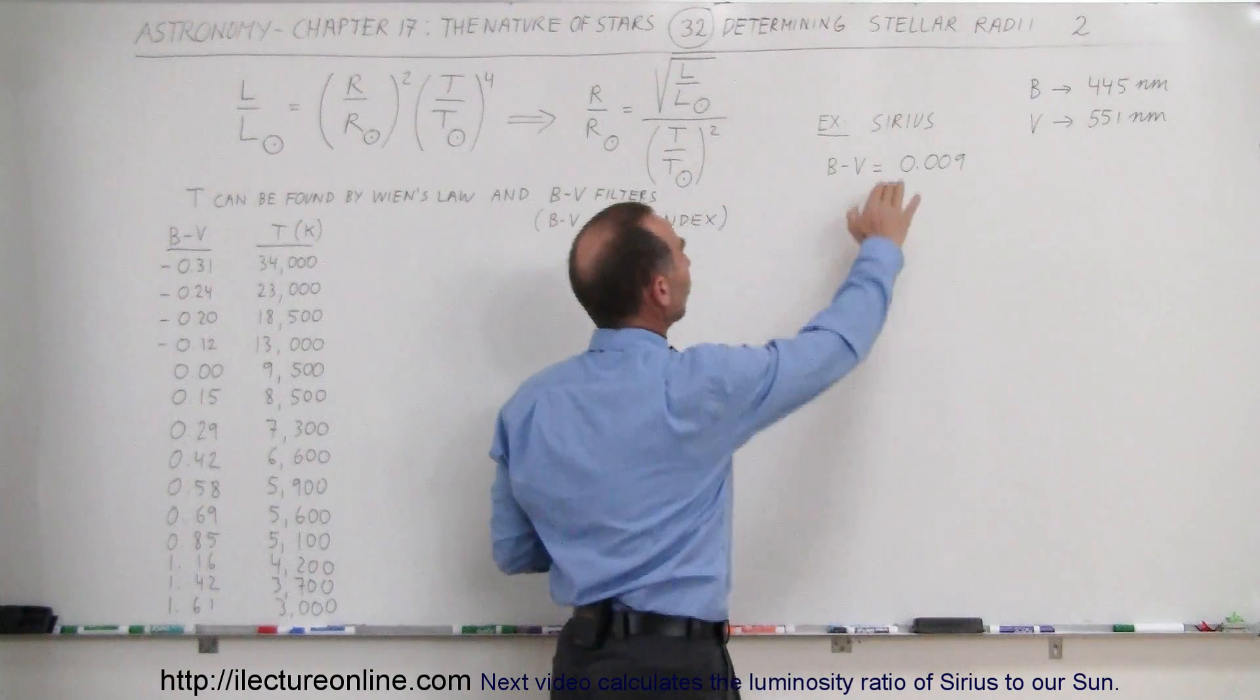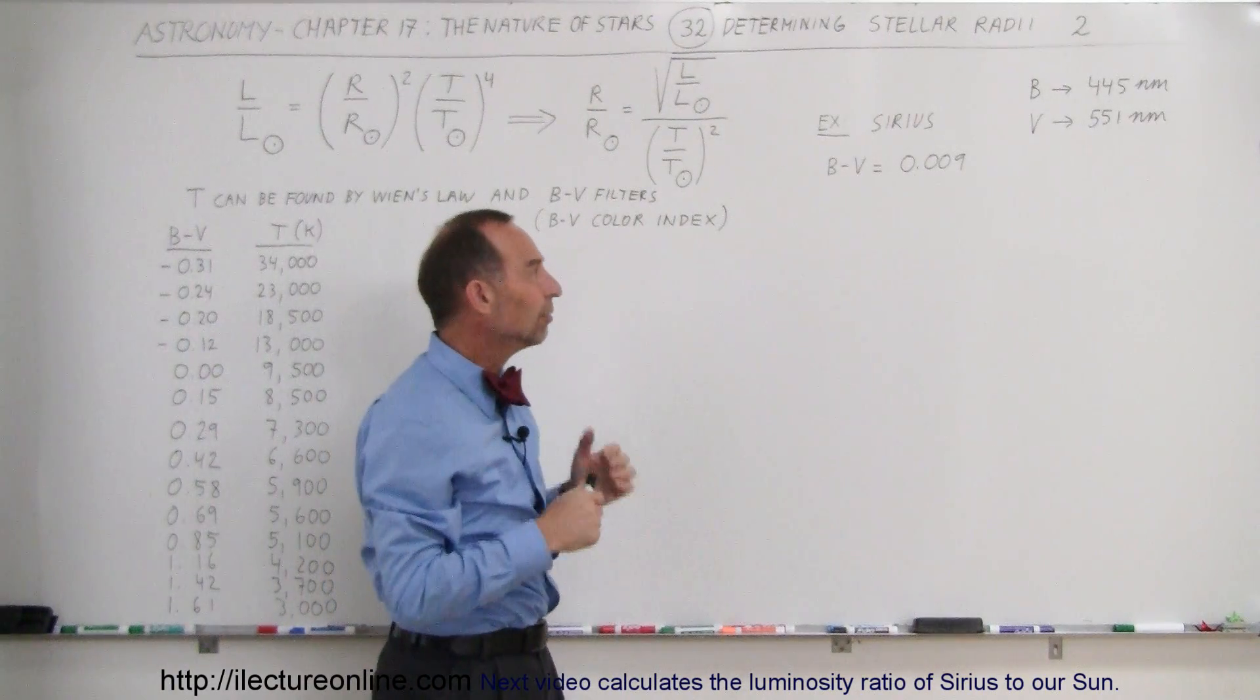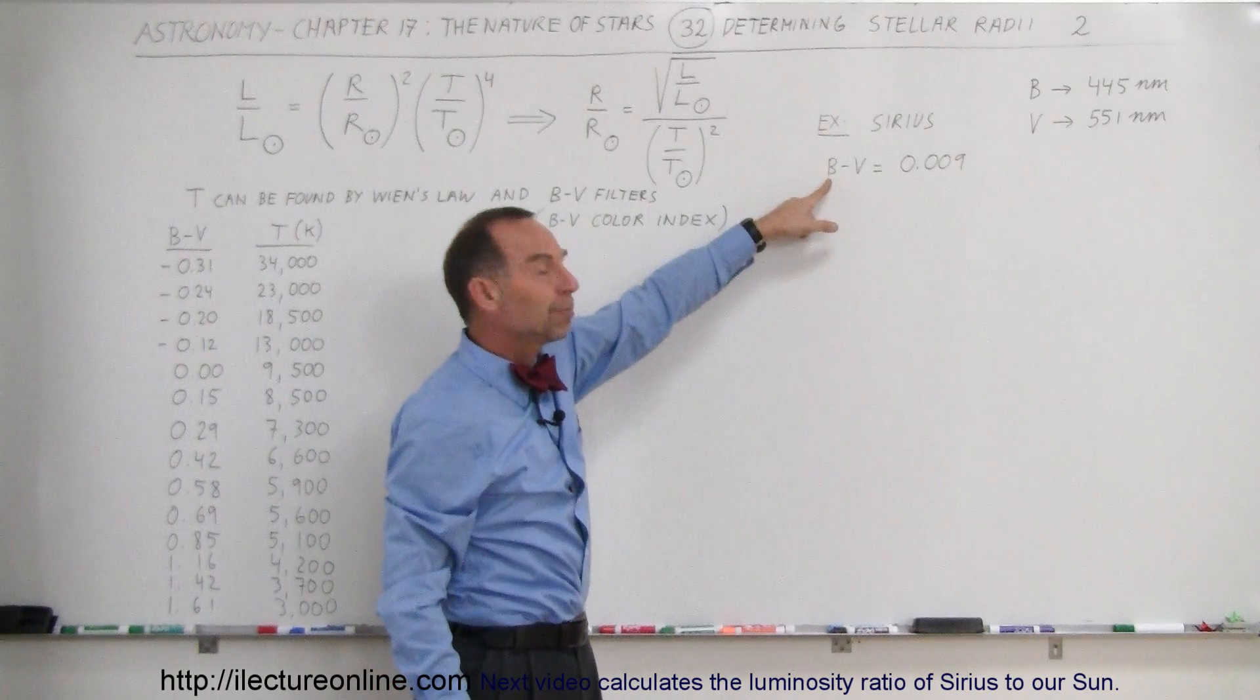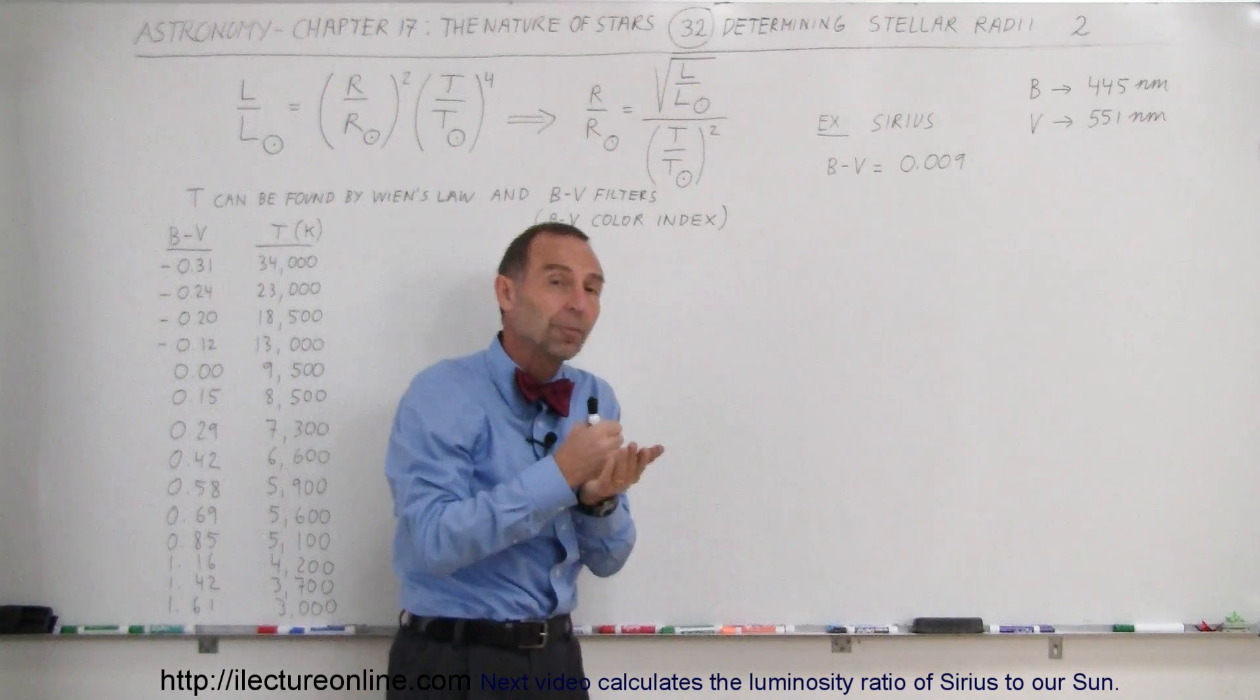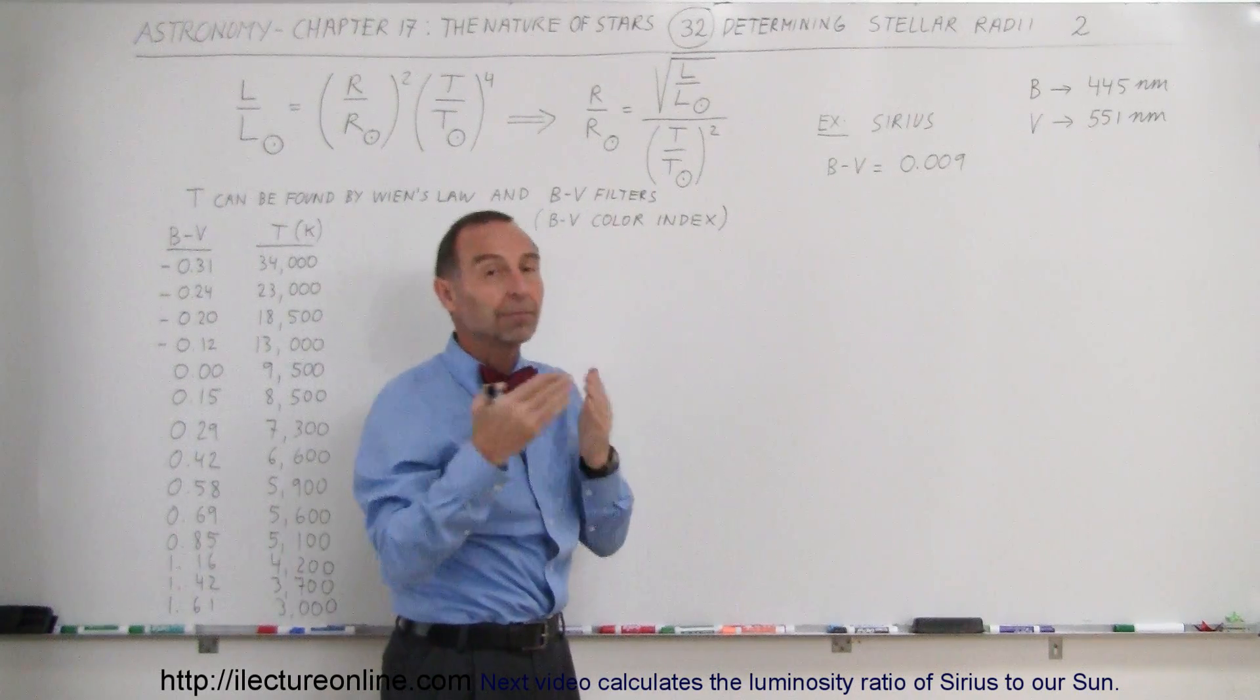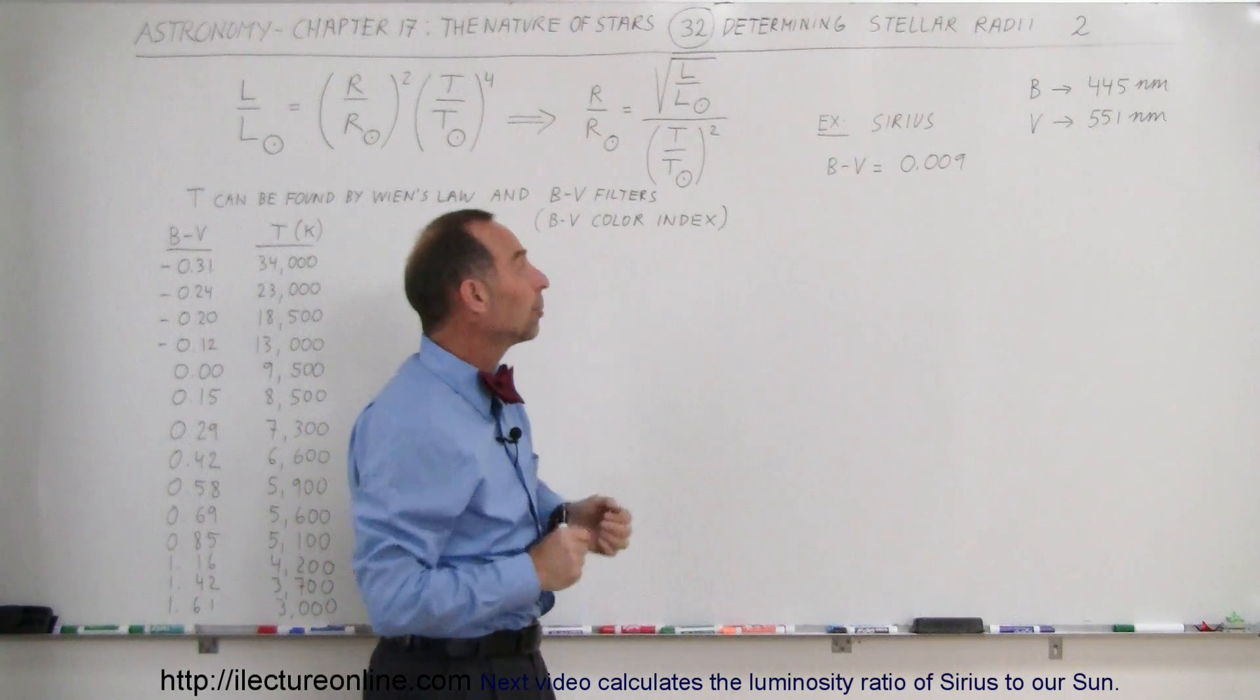Let's say we look at a star like Sirius, which is a fairly bright, hot star with fairly high temperatures. We look at the star with a B filter and we see how bright it appears. The brighter it is, the smaller the number, because the magnitude negative means very bright and positive means not so bright. The bigger the number, the dimmer. The smaller the number, the brighter.